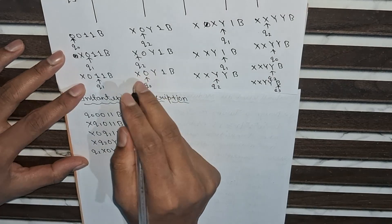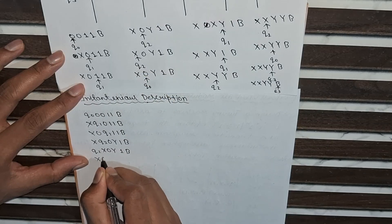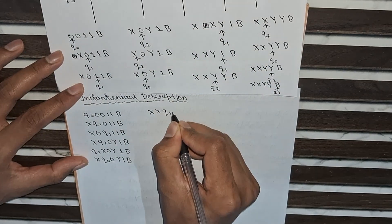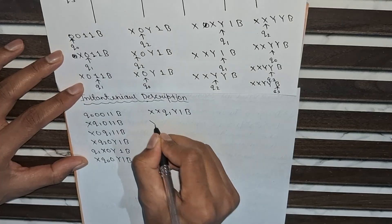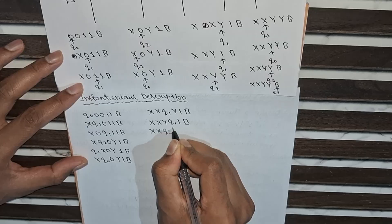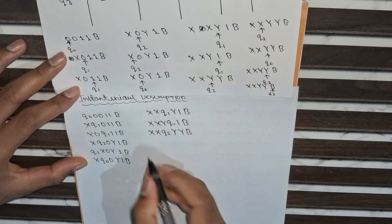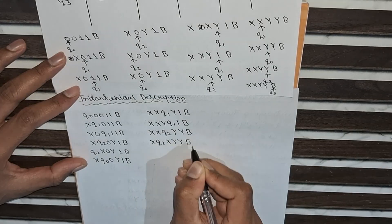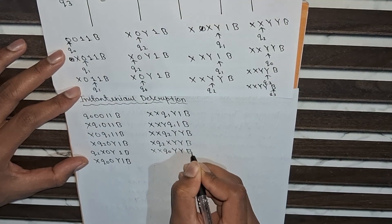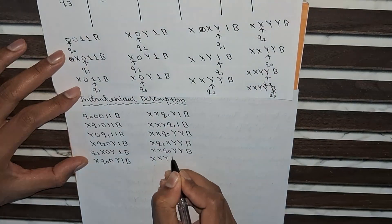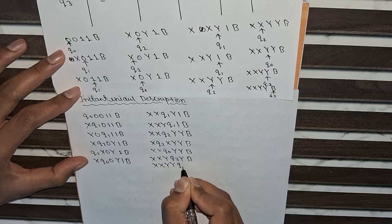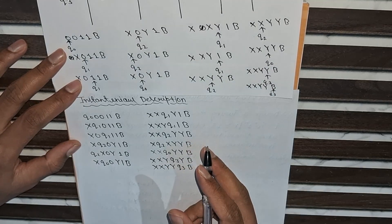Moving right on input symbol 0 with state q0: X q0 0 Y 1 B. Next step: X X q1 Y 1 B. Then: X X Y q1 1 B. Now move left: X X q2 Y Y B. Then: X q2 X Y Y B. Moving right: X X q0 Y Y B. Next: X X Y q3 Y B. Final step: X X Y Y q3 B — the read-write head is on blank, string accepted.